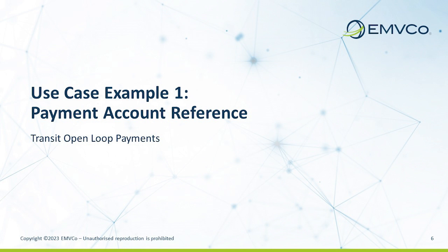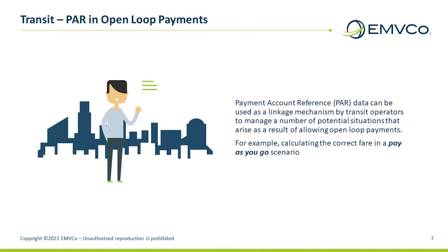PAR implementation is specific to the individual token program or card scheme. For the purposes of this use case example, an open loop transit payment is one made using a payment credential from a card issuer using a payment system and payment network that is designed to work at all transit operators which support that payment system. This is in contrast to a closed loop transit payment, where a transit operator has a payment solution which only works within their own system.